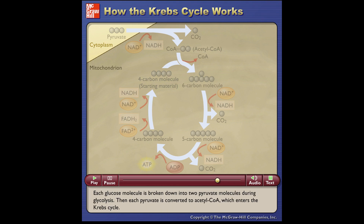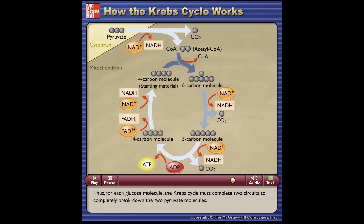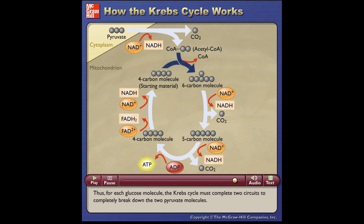Each glucose molecule is broken down into two pyruvate molecules during glycolysis. Then each pyruvate is converted to acetyl CoA, which enters the Krebs cycle. Thus, for each glucose molecule, the Krebs cycle must complete two circuits to completely break down the two pyruvate molecules.